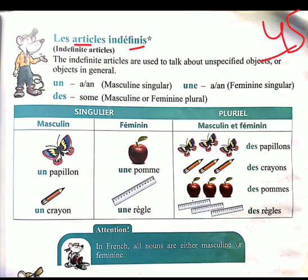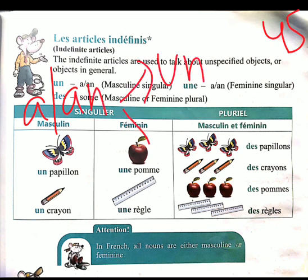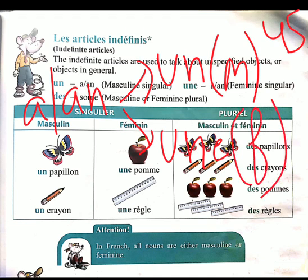In French there is no separate word for 'an' — we have only two words for 'a' and 'an': the first is un and the second is une. Un is used for masculine nouns and une is used for feminine nouns. In French, just as in Hindi, every noun is either masculine or feminine.